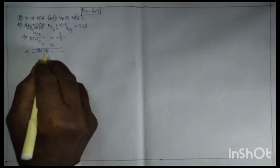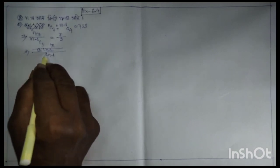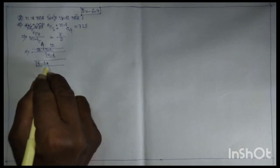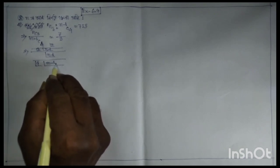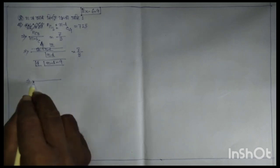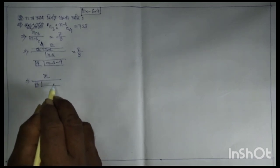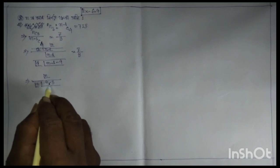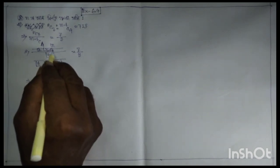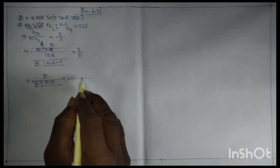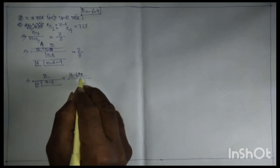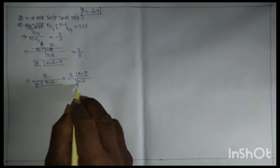3 into factorial n-1 by factorial n-1 by factorial n-4 into factorial n-1-4. n is equal to 7 by 3, implies factorial n divided by factorial 3 into n-3. n-3 into factorial n-3 into factorial n-1 by factorial n-3, 1 into n minus 5, by factorial n minus 1.